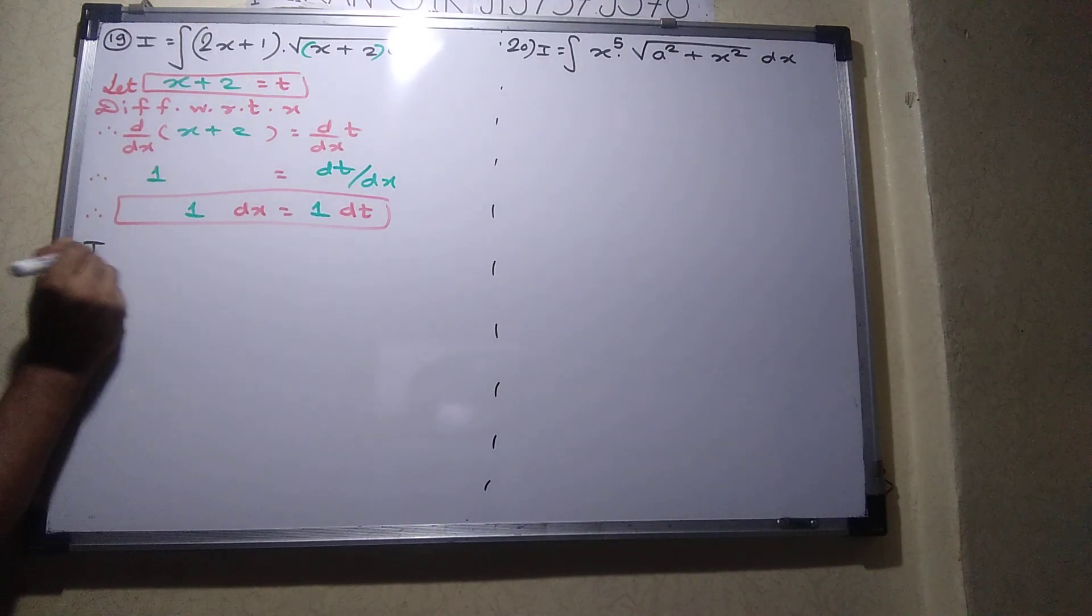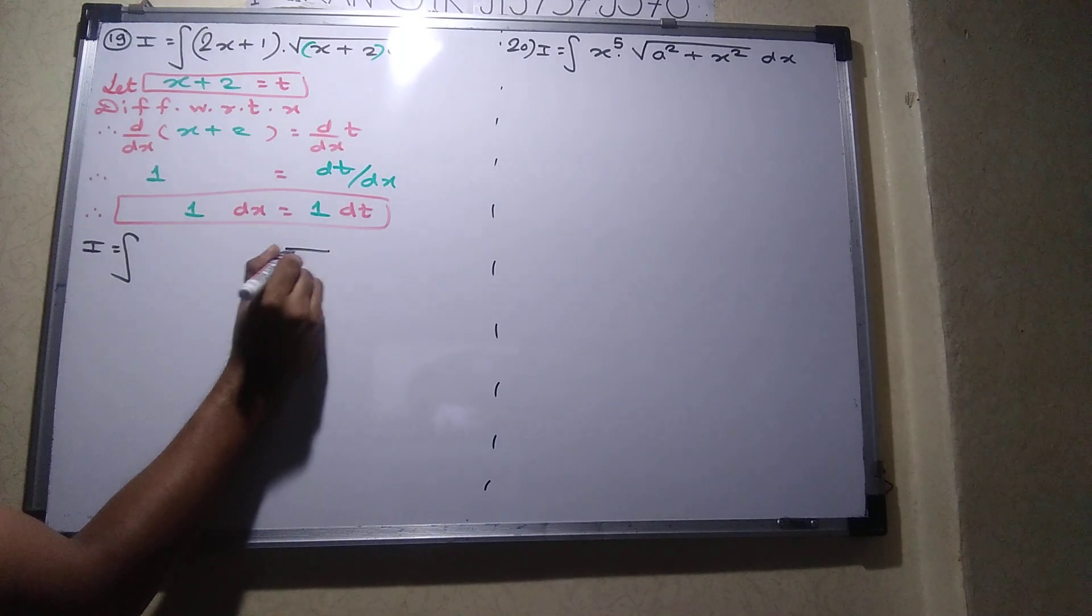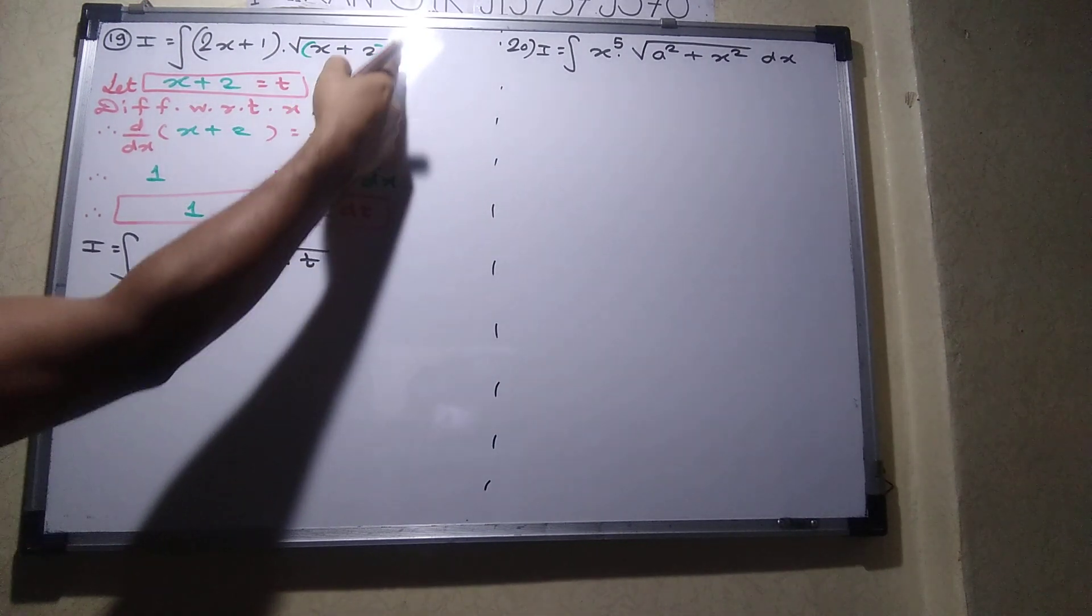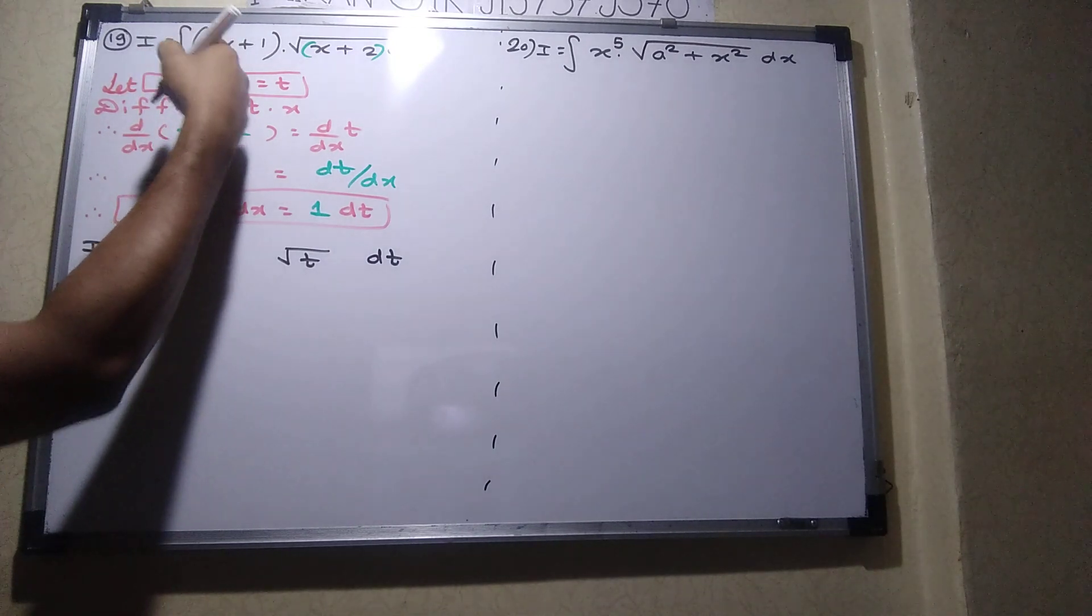Now convert entire numerical in terms of T. How do we do this? This is T, root T. This is dx equals to dt. What about this? How do we do this?